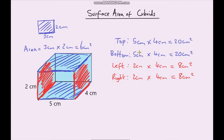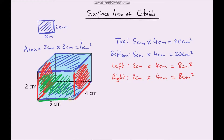So far we've got 4 of the faces. All we need to calculate now is the front and the back. So the front, which is this one here, that's going to be the base which is 5cm, multiplied by the height which is 2cm.